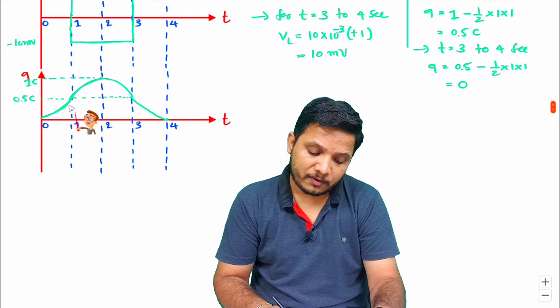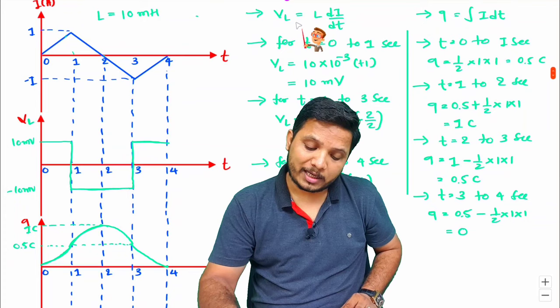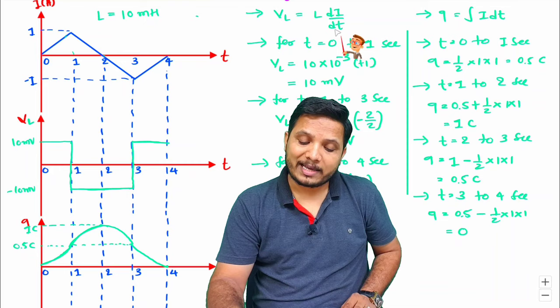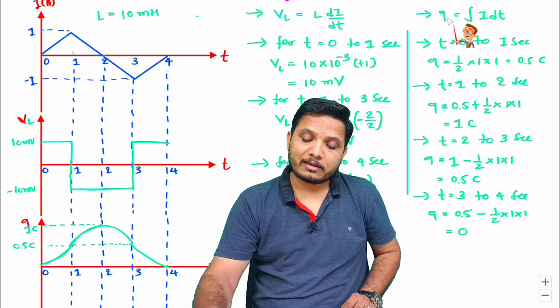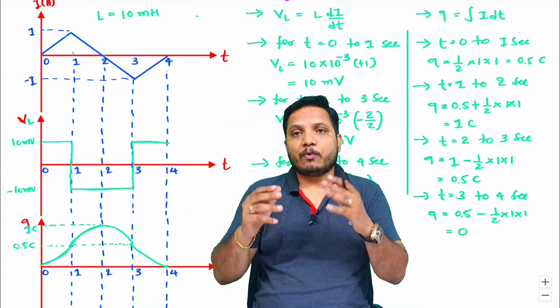This is the complete waveform of charge. To summarize: for voltage across inductance, use VL = L·di/dt; for charge across inductance, use Q = ∫i·dt. Using these formulas we can solve waveform problems for inductors. I hope you have understood this. If you have further queries, place them in the comment box — I'll be happy to help.